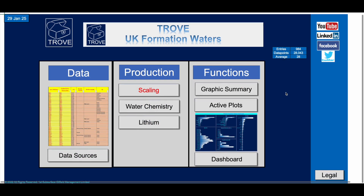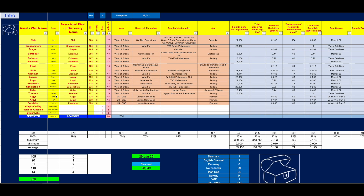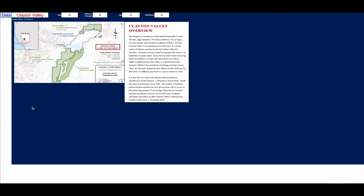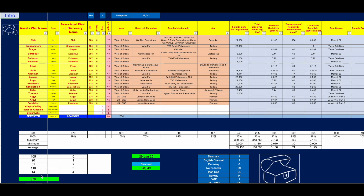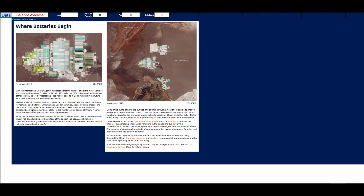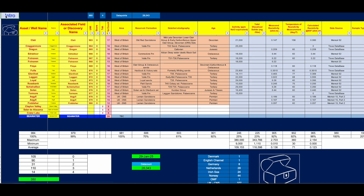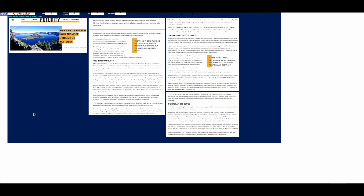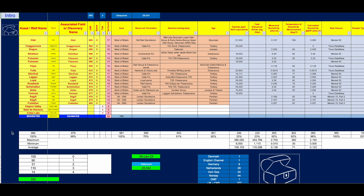So that's where we're up to — lots and lots of information. We also started to look at some specific areas of the world for specific projects. Here's Clayton Valley, looking at an area with a concentration of lithium. Likewise, the Salar de Atacama — 'where batteries begin' is the title. It's early days for this, and we haven't decided whether we're going to go ahead and fully populate it, but if it's something of value to you, let us do the legwork — we'll find all the data for you.